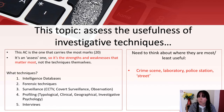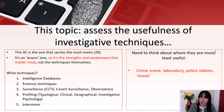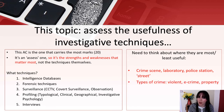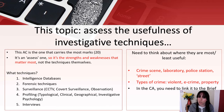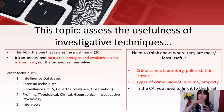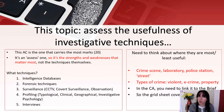You need to think about where these techniques are most or least useful — at the crime scene, the laboratory, the police station, the street. Also consider the types of crime they help with: violent crime, e-crime, property crime. In your controlled assessment you'll need to link it to the brief — just like last time, you'll get a short story and bring all of this in. The grid sheet will cover all these aspects and you'll get it next week.